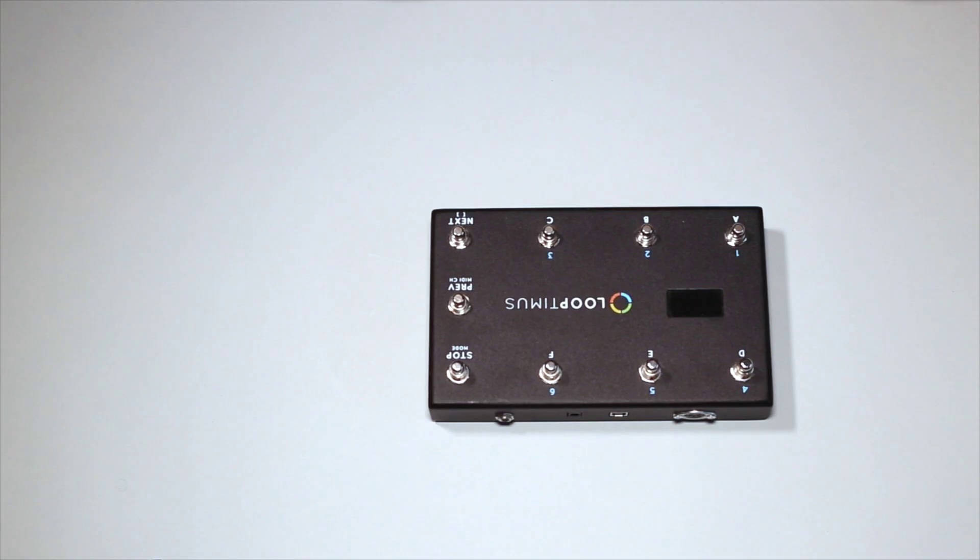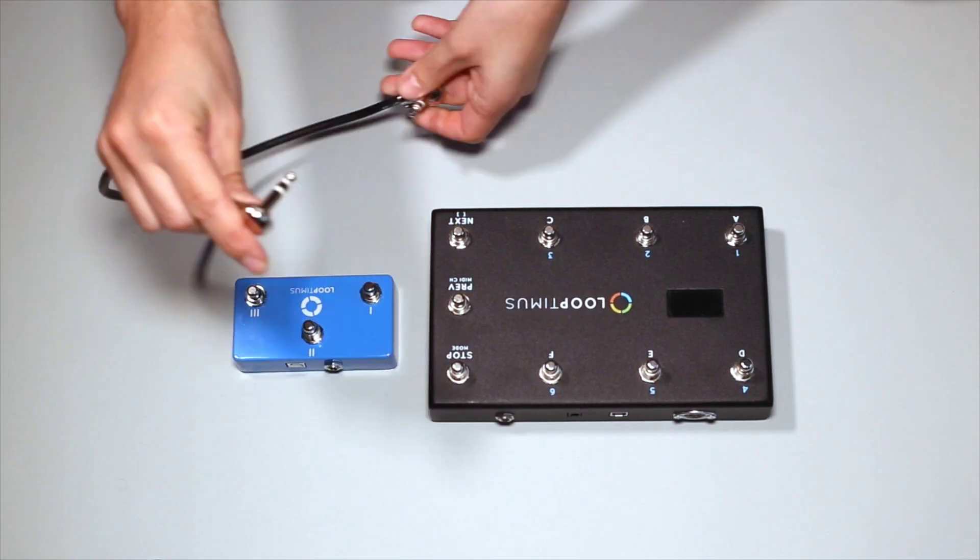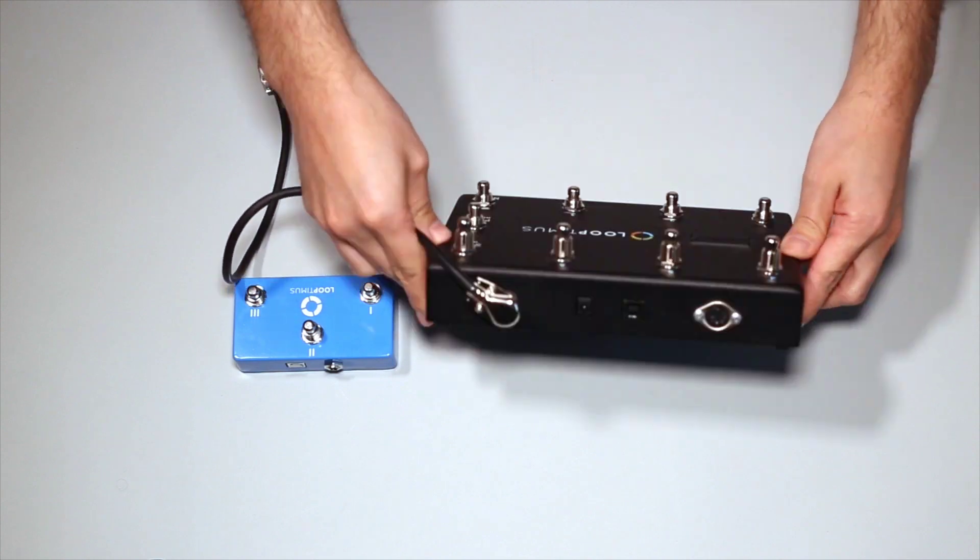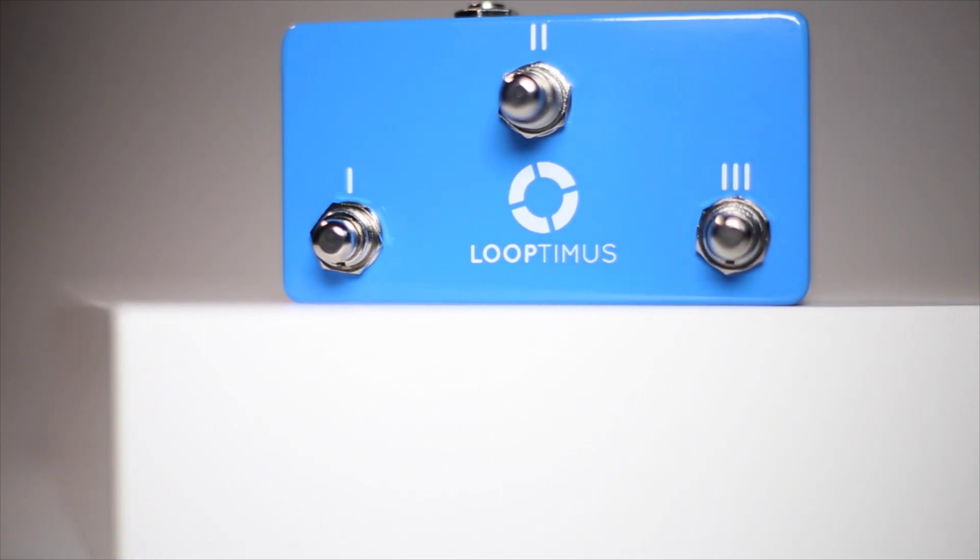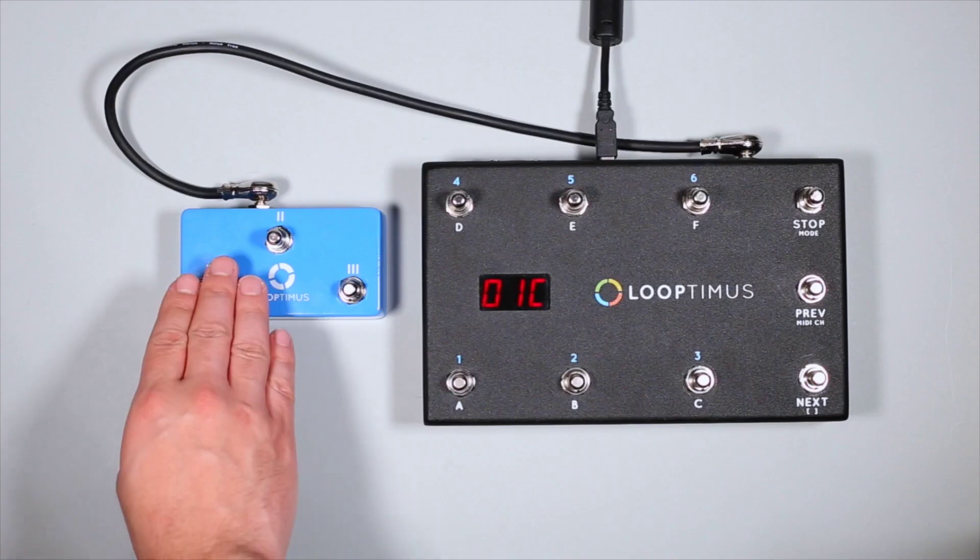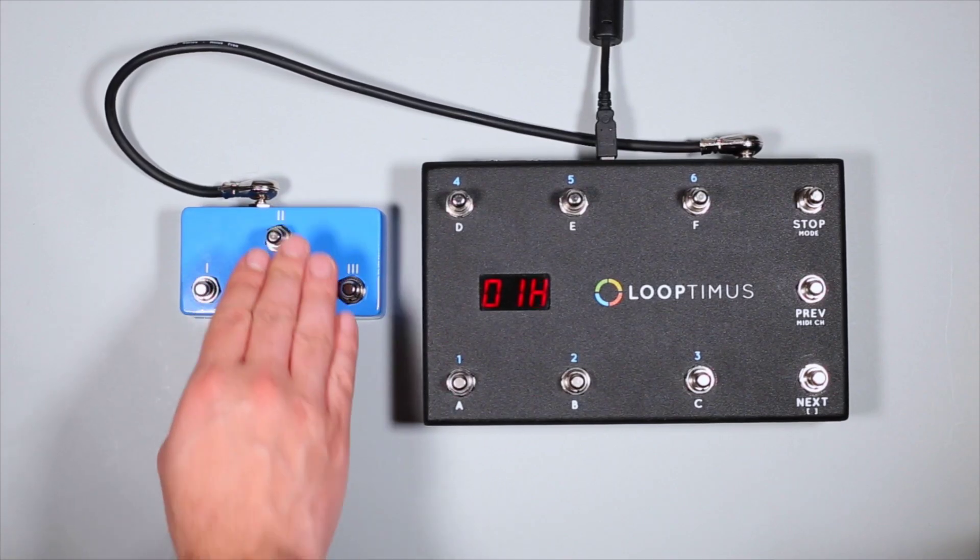Looptimus Mini can also be used to expand the capabilities of your Looptimus controller. Once they are connected, Looptimus Mini adds three additional buttons per bank, three more standalone buttons, or can be used to quickly switch between Looptimus modes.